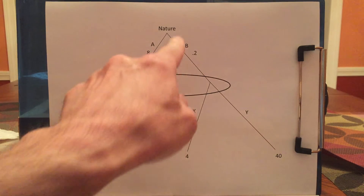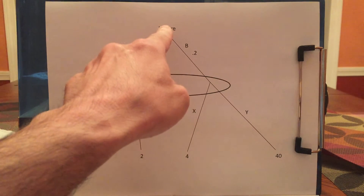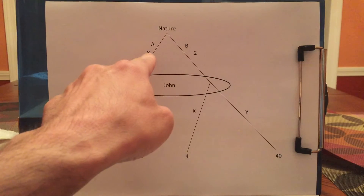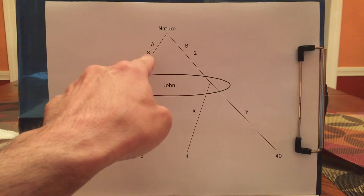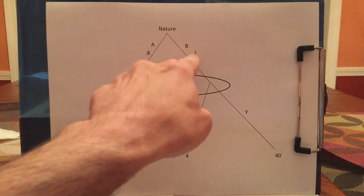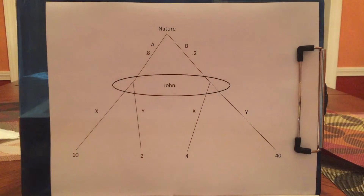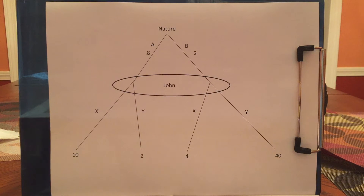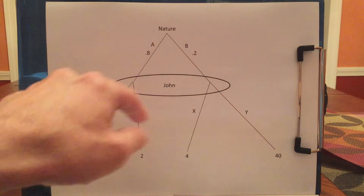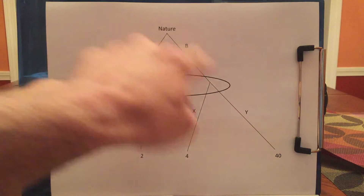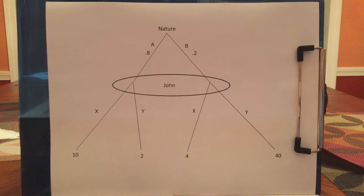For example, in this game, nature will play A 80% of the time and will play B 20% of the time. You can imagine there's a 10-sided die, and if the number comes up 1 through 8, it's A; 9 or 10, it's B.